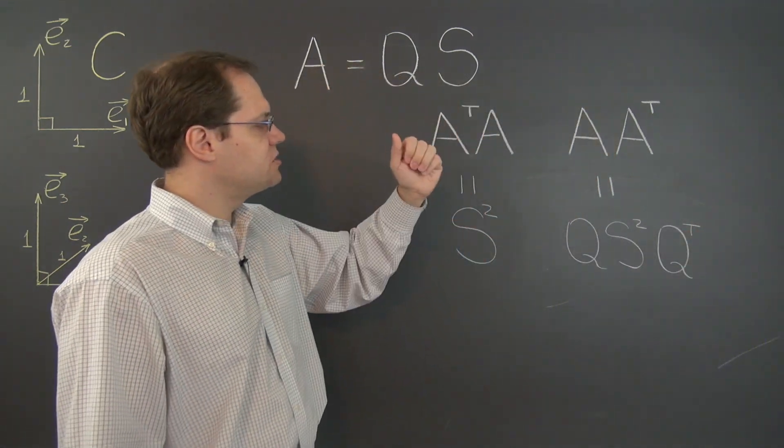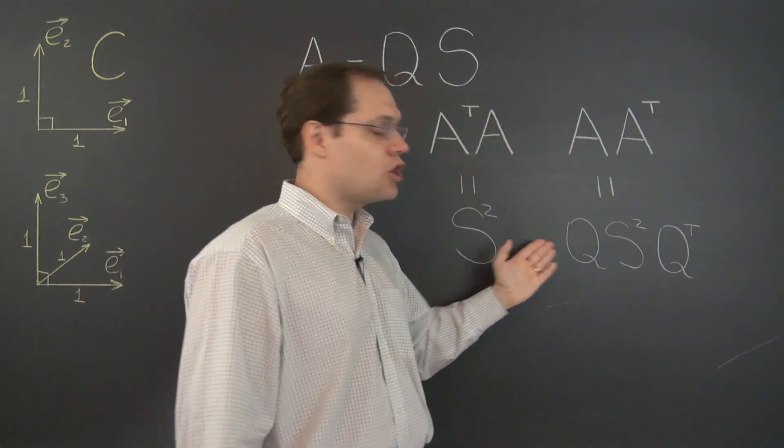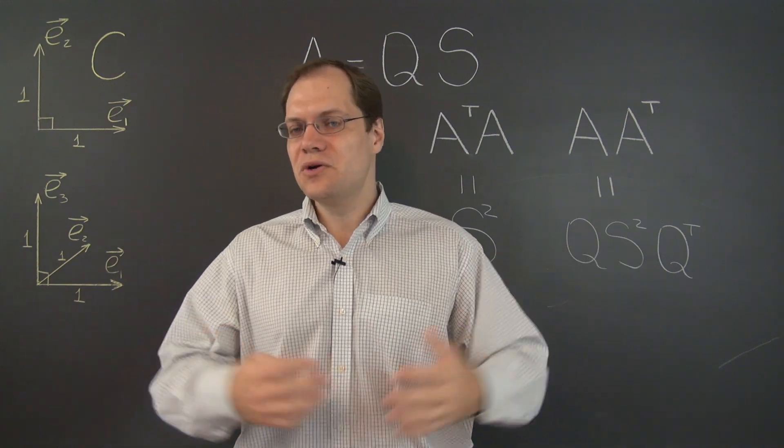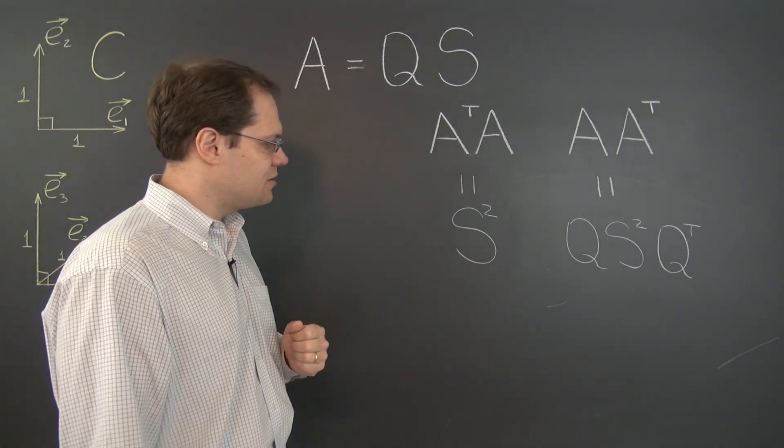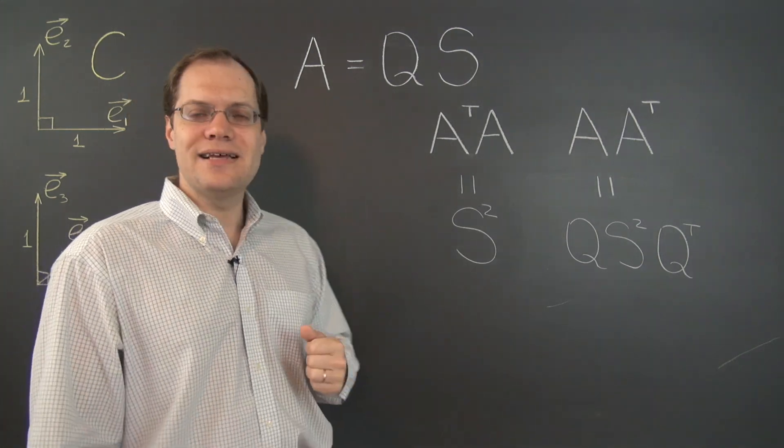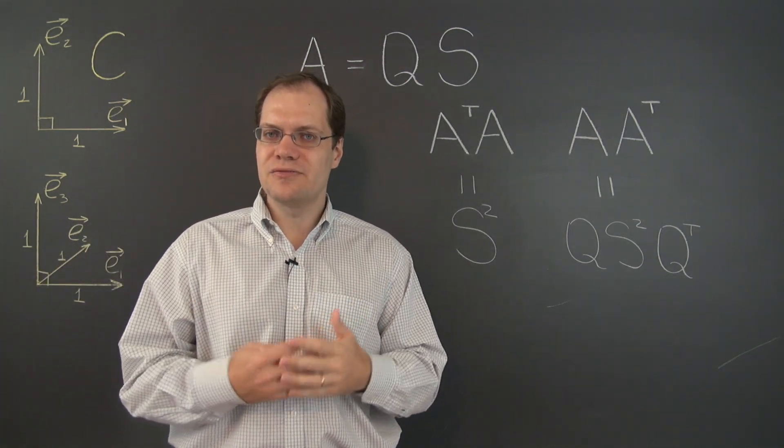So the matrices A transpose A and A A transpose are different just as we would expect because matrix product is non-commutative. But nevertheless they have identical eigenvalues. Why is that?